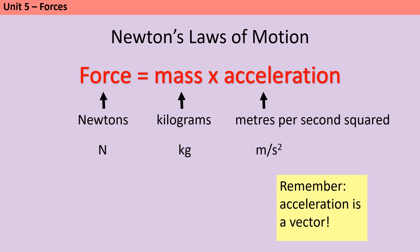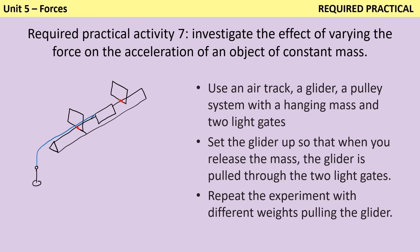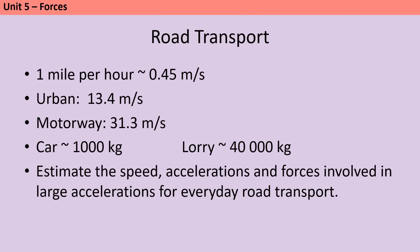You should also know that acceleration is a vector — a negative acceleration shows that an object is slowing down. You should have investigated this relationship as part of required practical seven using a glider pulled by hanging masses along an air track, using light gates to measure acceleration. As we add more masses the force increases and therefore the glider accelerates faster. You may be asked to complete estimations about speed and acceleration in everyday road transport. Note there's about half a metre per second per mile per hour, cars tend to have a mass of around 1000 kilograms and lorries tend to be about 40 times heavier.